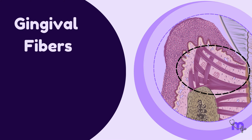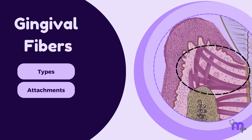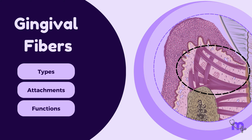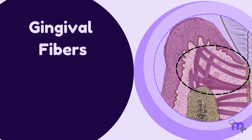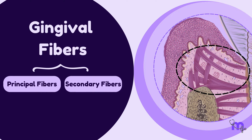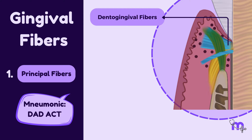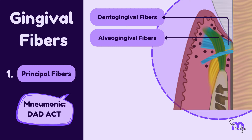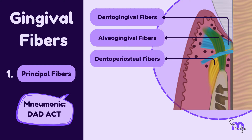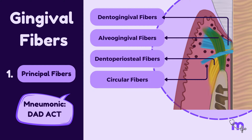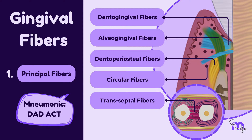Let us now dive into the intricate details of the gingival fibres, understanding their types, attachments, and functions. For clarity, we'll categorize the gingival fibres into principal and secondary fibres. The principal fibres are of five types: dento-gingival fibres, alveolo-gingival fibres, dento-periosteal fibres, circular fibres, and transseptal fibres.